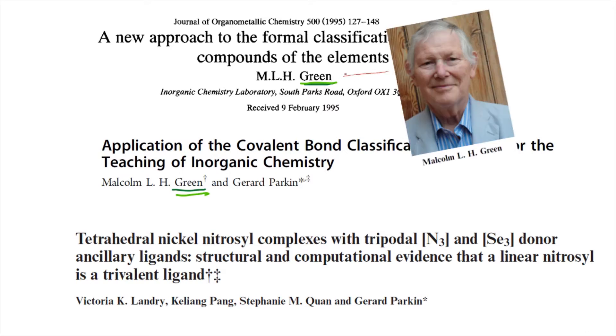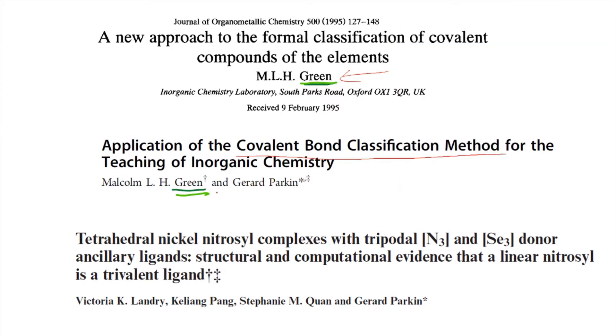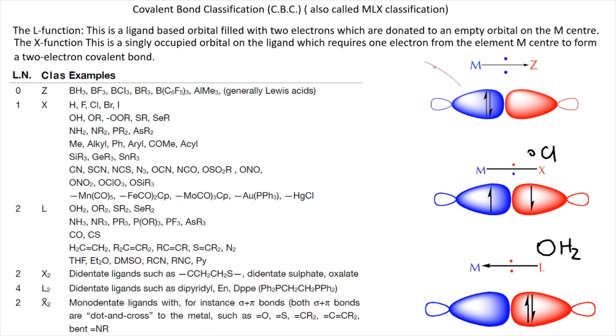This is some basic literature. Just be aware that this person actually developed the covalent bond classification method. So this is revision: we have a hybrid orbital on metal and hybrid orbital on ligand. With Z ligands both electrons come from metal, with X ligands one electron comes from metal and one from ligand, and with L ligands both electrons come from the ligand.